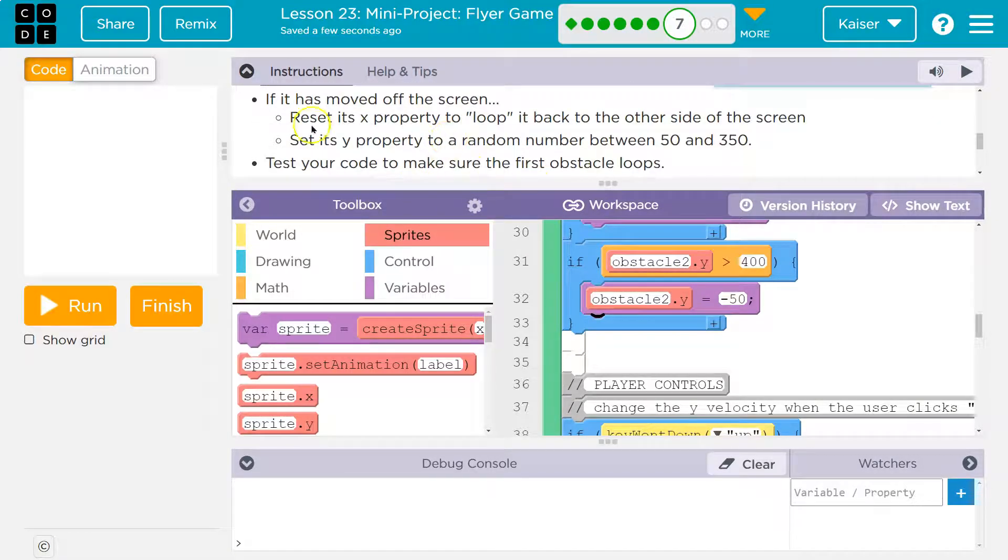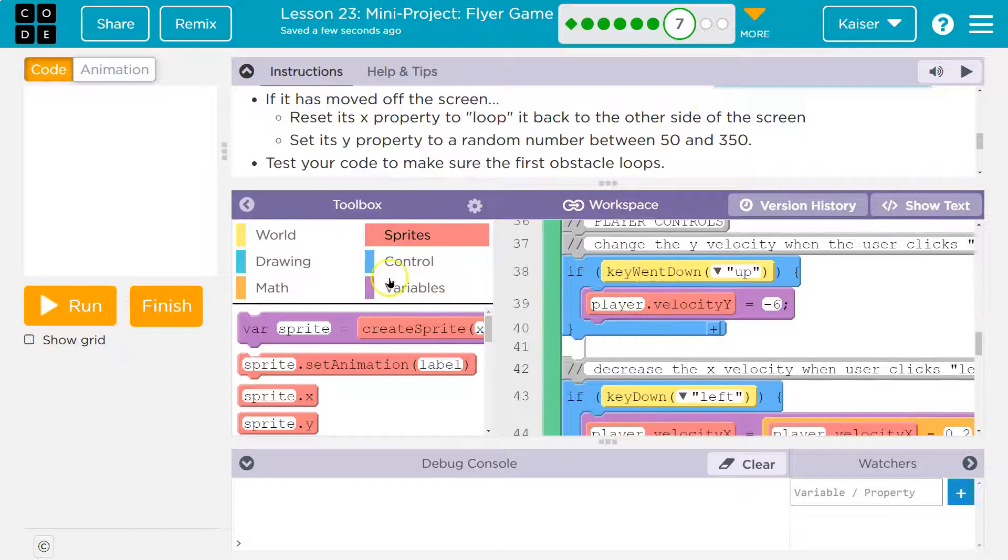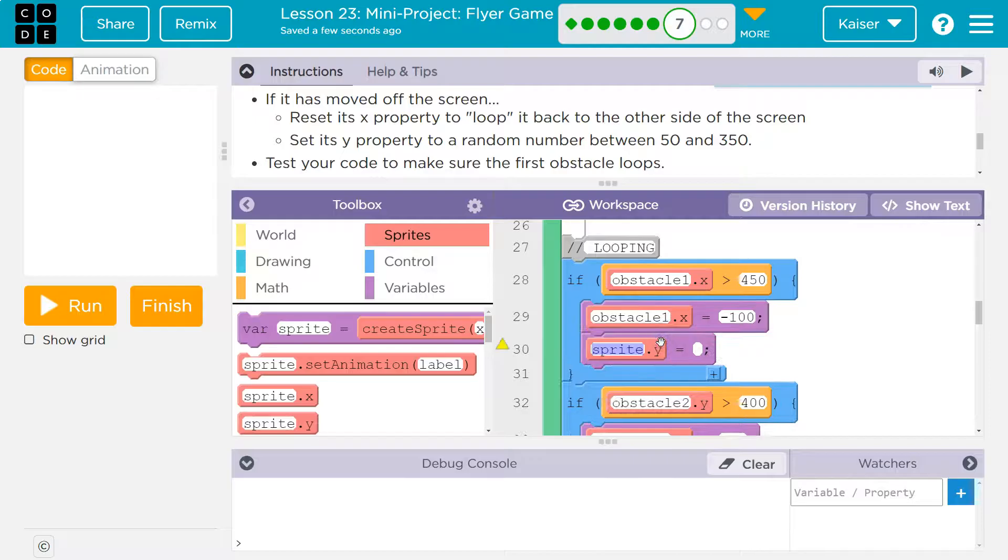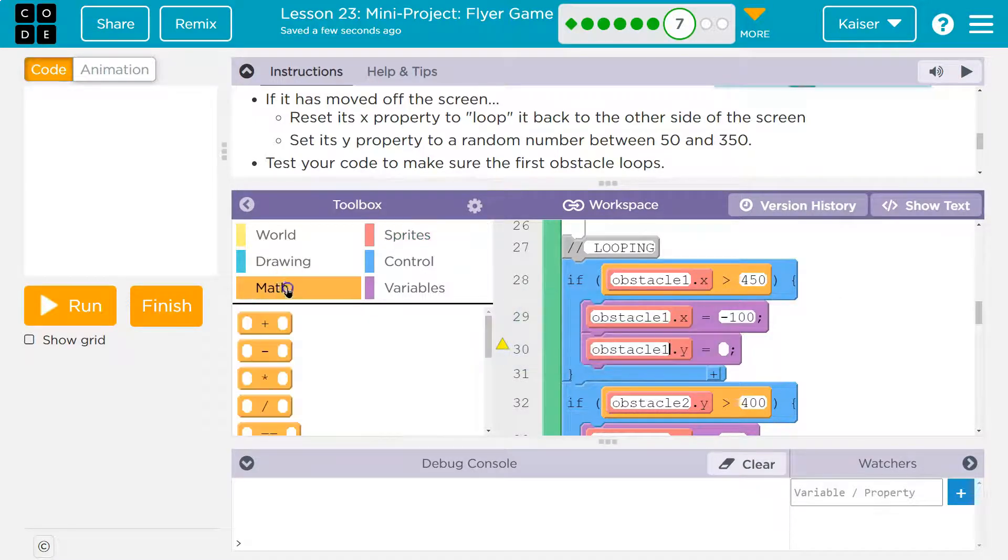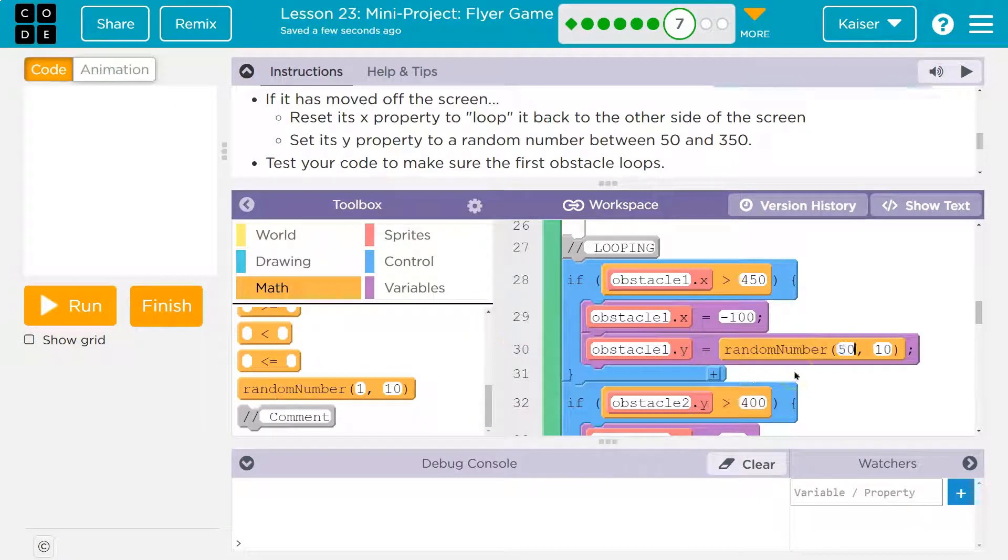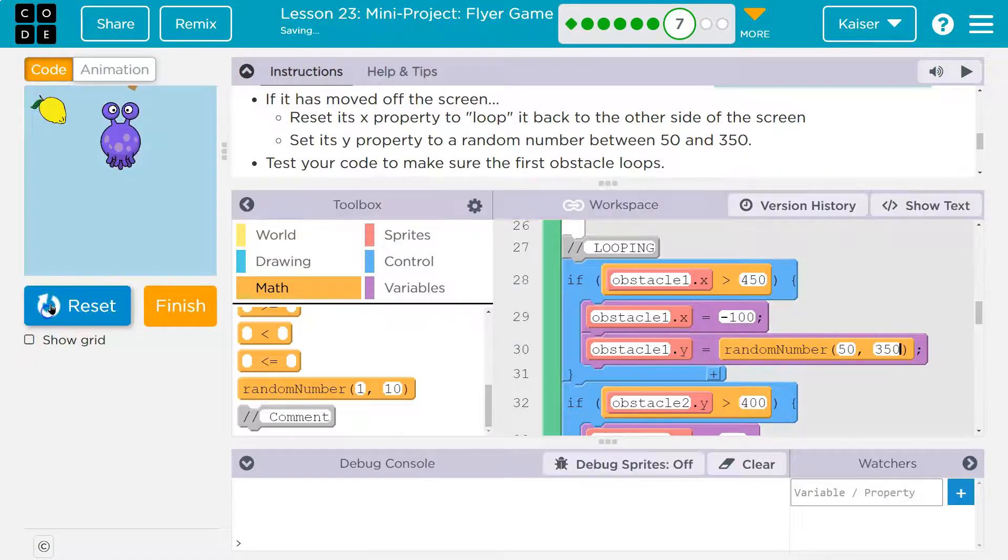For the x one, we're going to give it a random y value up here somewhere between 50 and 300. So now we need to do that. Inside of this if, where we say if you're off the screen, we're going to push you back over here, and then we're going to do sprite y value is going to be a random number. They say 50 to 350. The reason they say 50 to 350 is so it stays on the screen.